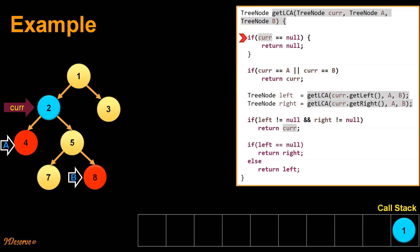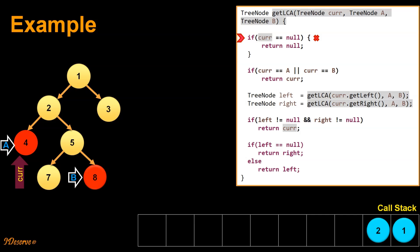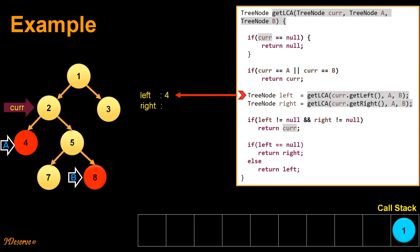The current pointer is now pointing to node 2. Since current pointer is not null, we move on. Current node is not equal to A or B. We move on. Further down, current node is equal to A, so we return the current node, which is A (node 4). We go back to the previous call stack. Left node now has value 4. We then call getLCA recursively for the right subtree. The current pointer is pointing to node 5. Since it is not null, we move on. It is not equal to A or B, so we move on.